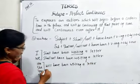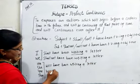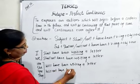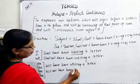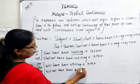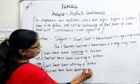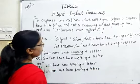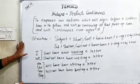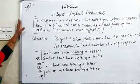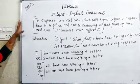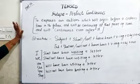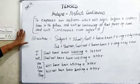Negative करना है तो will not, या उसका short form won't — will not have been writing a letter. यह हमारा future perfect continuous tense के structure और sentences हैं — जो future में start होके वो action continue future में चल रही होगी।